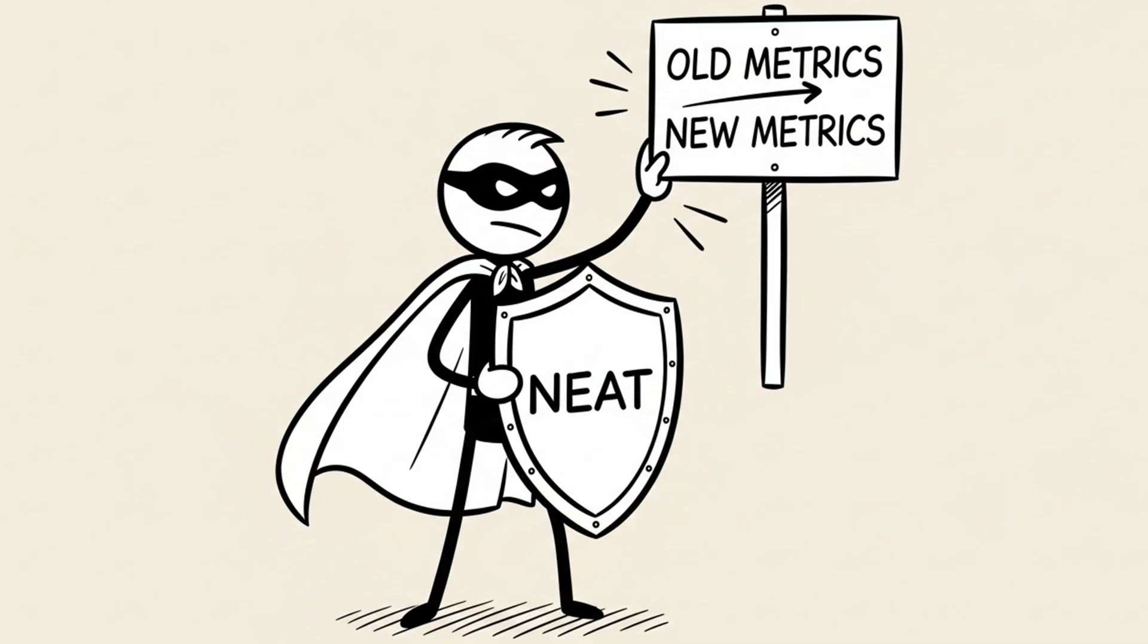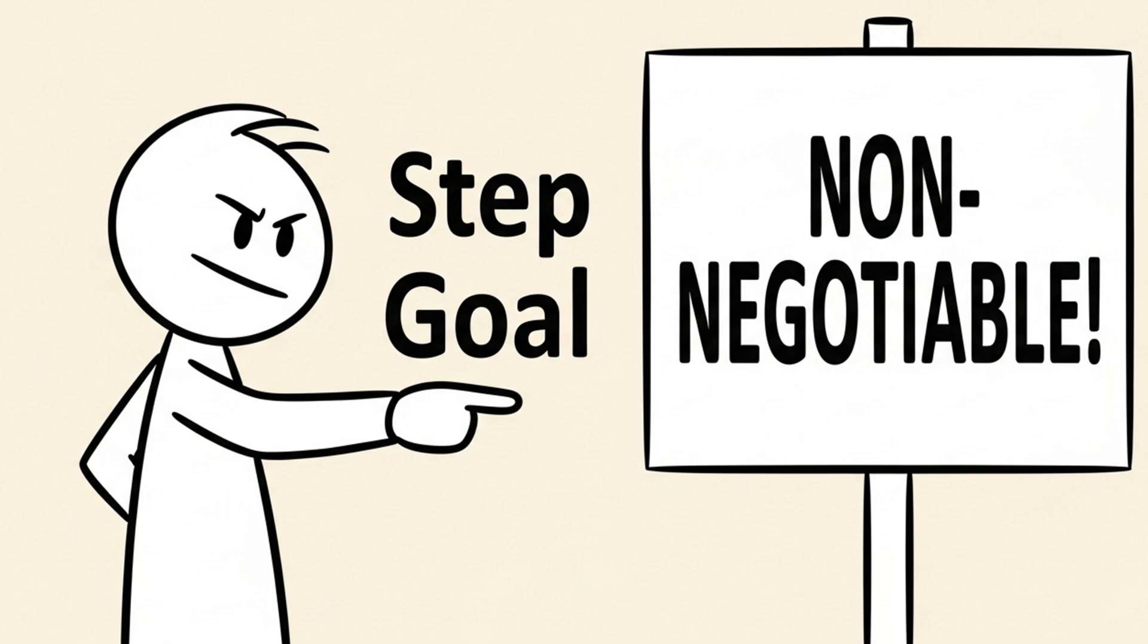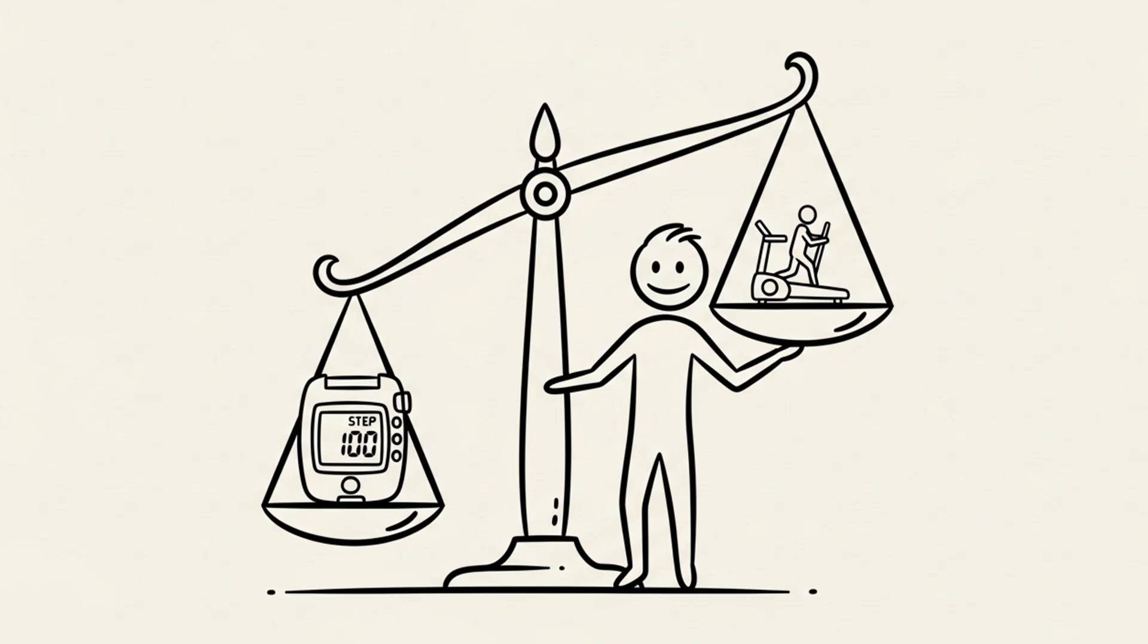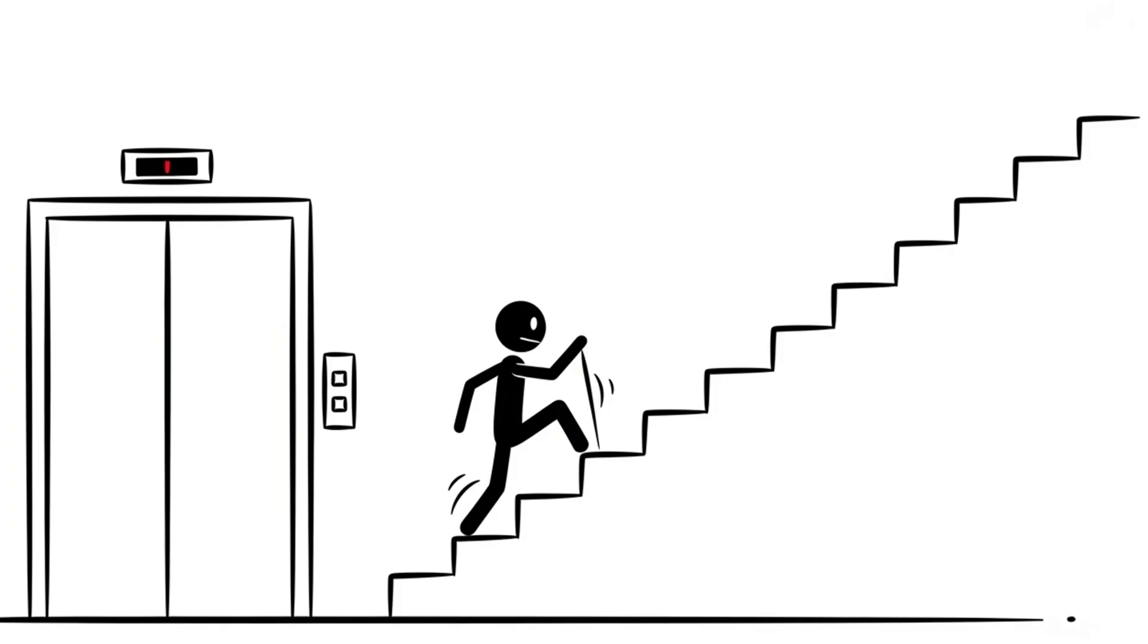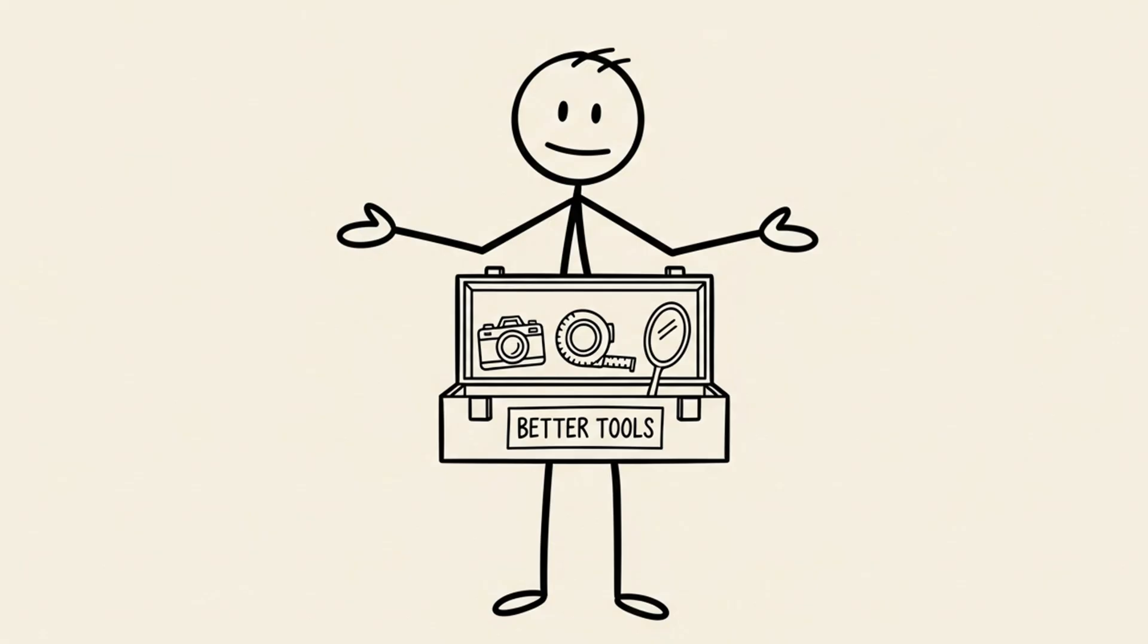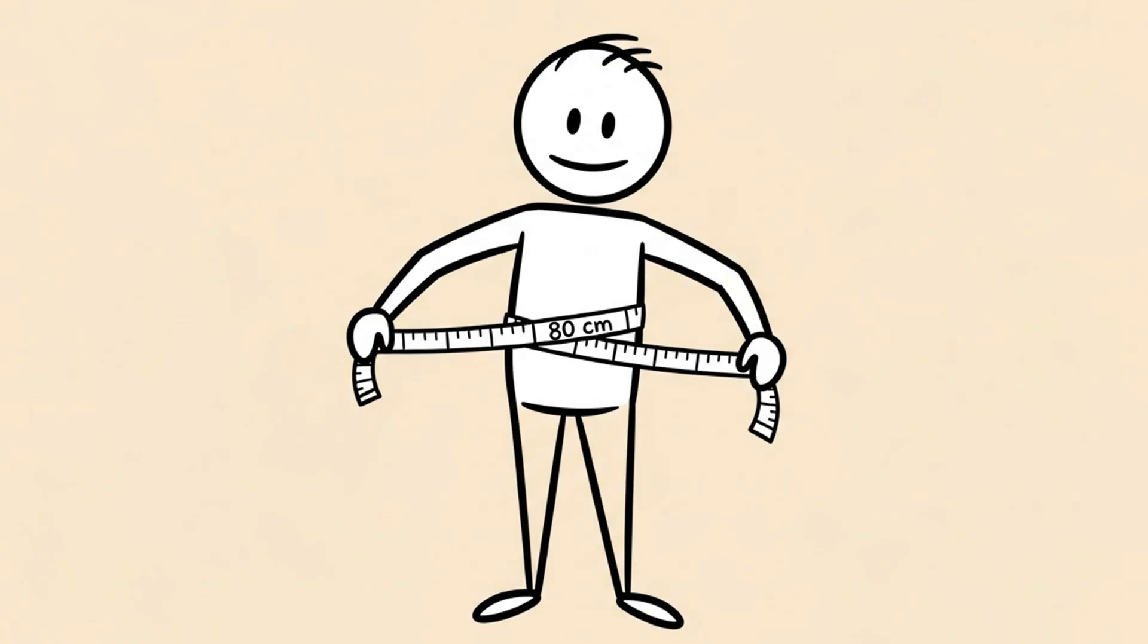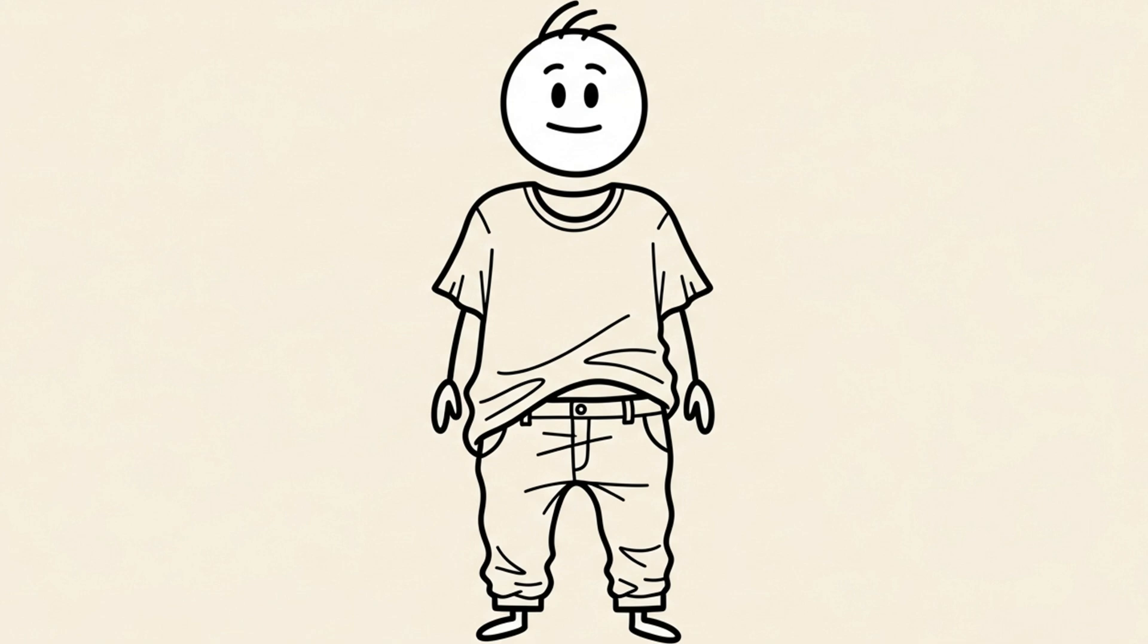Step three, defend your NEAT and change your metrics. You must protect your non-exercise movement. Set a daily step goal. 8,000 to 10,000 steps. Make this non-negotiable. It's more important than your cardio session. Take the stairs. Park farther away. And finally, stop trusting the scale. Use better tools. Take progress photos once a week. Use a tape measure for your waist. How do your clothes fit? These are a much better indicator of fat loss than a random number on a scale.